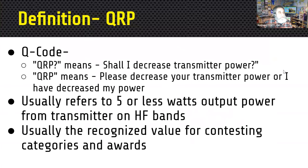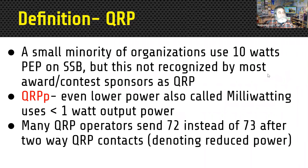The definition of QRP: in the Q-codes, QRP with a question mark means 'shall I decrease my transmit power,' and the statement QRP means 'please decrease your transmit power' or 'I have decreased my transmit power.' In general in amateur radio, it refers to five watts or less output power from the transmitter on HF bands. The recognized value for contesting categories and awards is five watts, although a few clubs use 10 watts PEP on single sideband. QRPP means even lower — less than one watt — often called milliwatting.